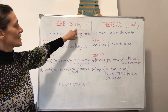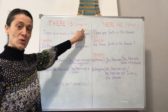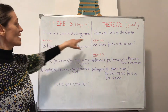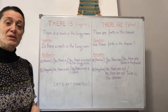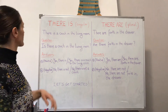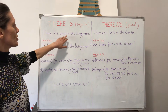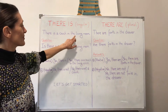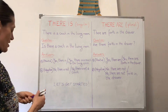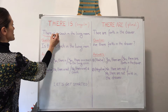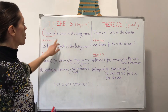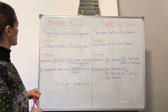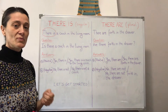There is — singular, c'è. There are — plural, ci sono. First example: 'There is a couch in the living room' — c'è una poltrona nella sala da pranzo. Ecco qui: 'there is', quindi c'è una poltrona nella sala da pranzo. Vediamo come si fa la domanda.